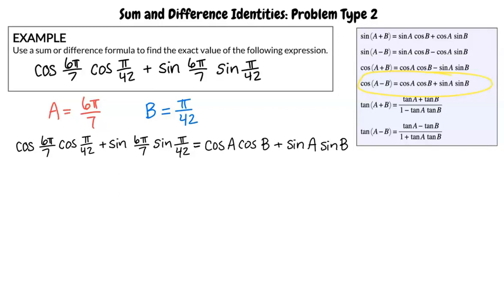On the left side of our equation, we can see that the angles given with the first cosine and first sine are 6π/7. And the angles given with the second cosine and second sine are π/42.